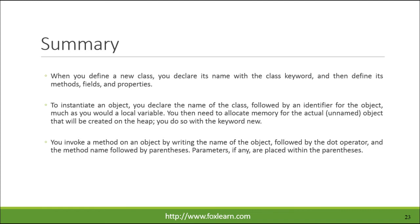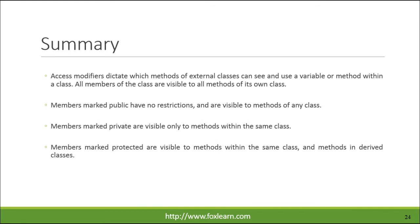You invoke a method on an object by writing the name of the object, followed by the dot operator, and the method name followed by parentheses. Parameters, if any, are placed within the parentheses. Access modifiers dictate which methods of external classes can see and use a variable or method within a class. All members of the class are visible to all methods of its own class. Members marked public have no restrictions and are visible to methods of any class. Members marked private are visible only to methods within the same class. Members marked protected are visible to methods within the same class and methods in derived classes.